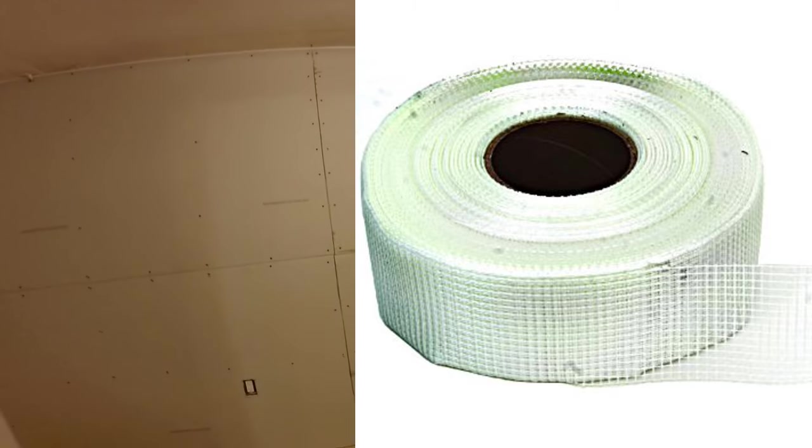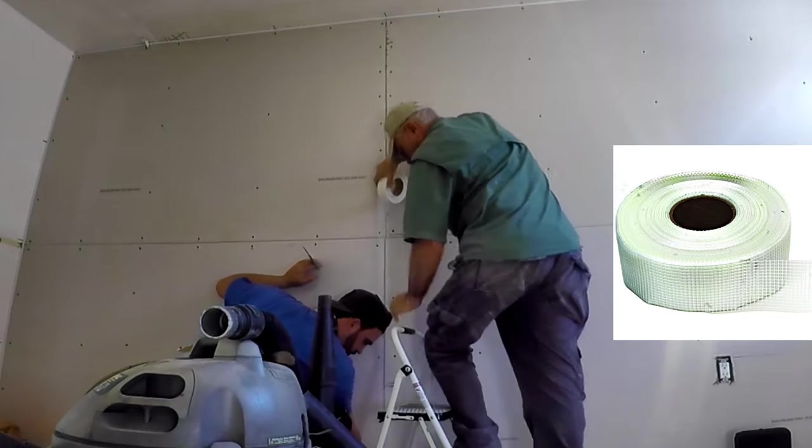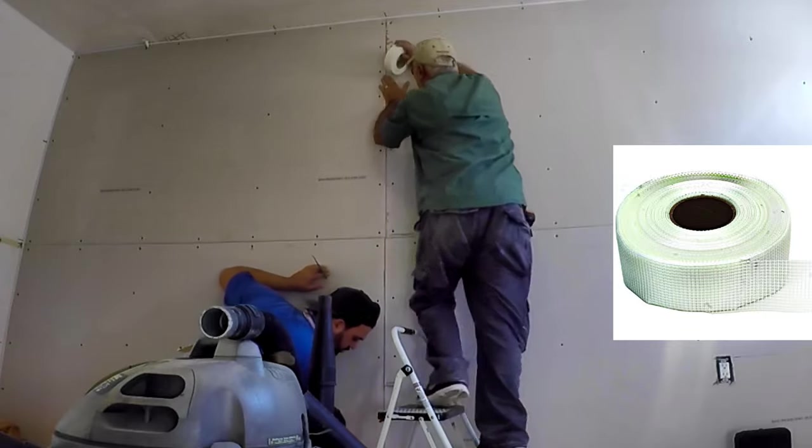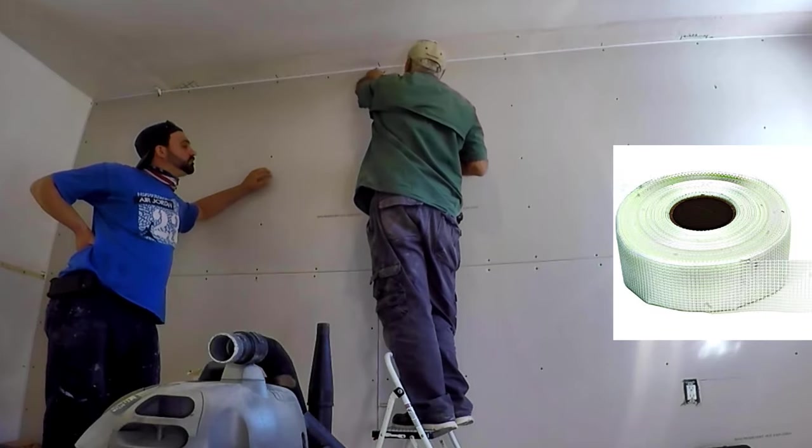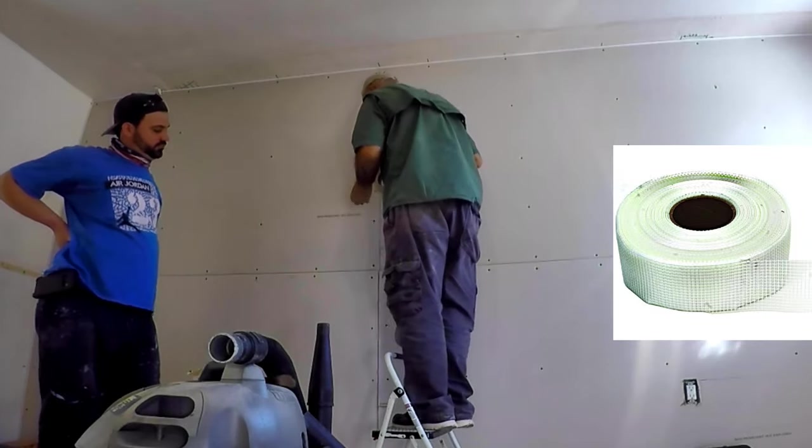All it needs is a bead of caulking, which will be done after the compounding and sanding. Before we start the compounding, we put tape on the joints to avoid cracking. On small jobs like this, I like using fiberglass self-adhesive drywall joint mesh tape. The self-adhesive makes it easy to pre-apply it on the joints.